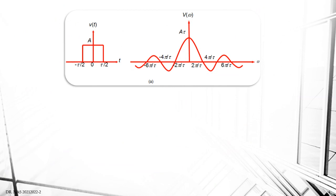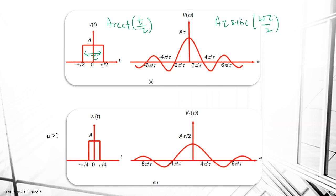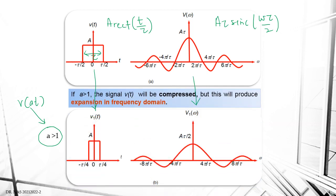This graph shows the original rectangular signal A*rect(t/tau), where tau is the width. It produces the sinc function: A*tau * sinc(omega*tau/2). Now if you have a scaling factor 'a' larger than 1 — for example v(at) — the signal will be compressed in t compared to the original, but expanded in frequency. You can see that the frequency is expanded from the original frequency spectrum.